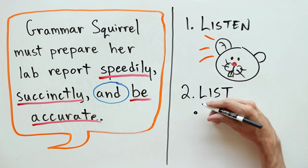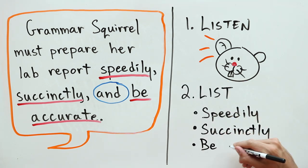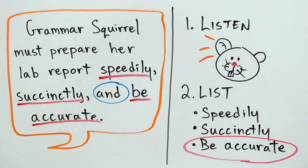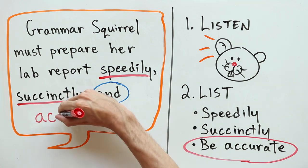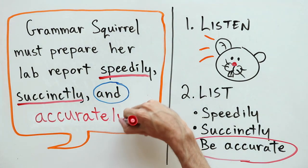Our second tip is to list these elements in a column. Do they look the same? Again, if not, you probably have a problem. In which case, you need to rewrite your sentence until that problem goes away.